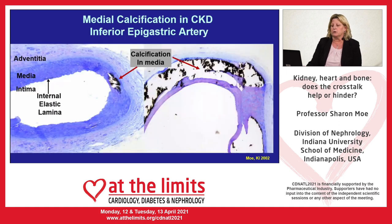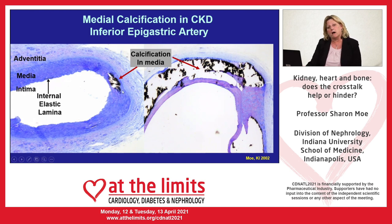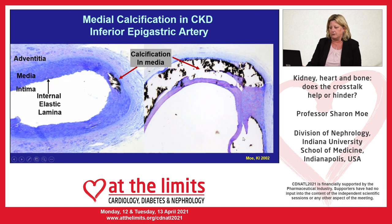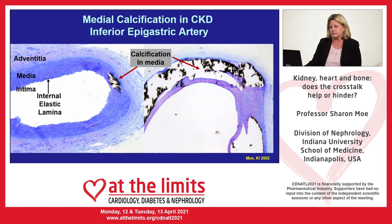Calcification can also occur in the medial layer. This is the inferior epigastric artery where we see calcification in the medial layer on the left in black, and on the right we can see it's almost circumferentially damaged this entire vessel. There's a little bit of intimal changes on the right artery but nothing on the left, so medial calcification can occur independent of intimal changes.